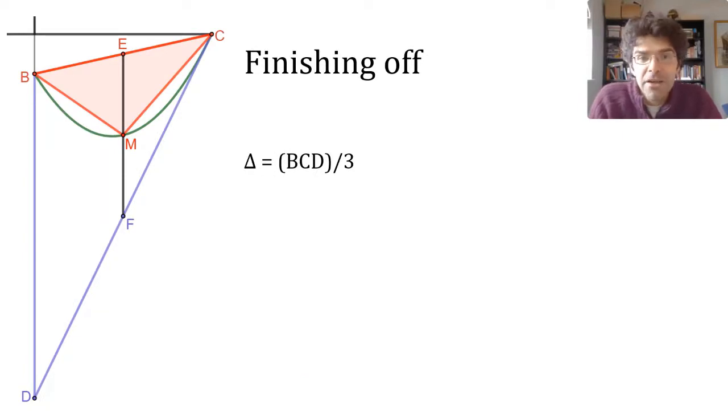To finish off, then, we can reason backwards pretty straightforwardly to say that for any parabolic segment, we could create a corresponding triangle BCD. It's not just that a certain class of parabolic segments could be created the way that we've just done. All of them can be.